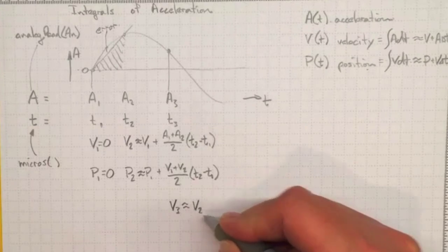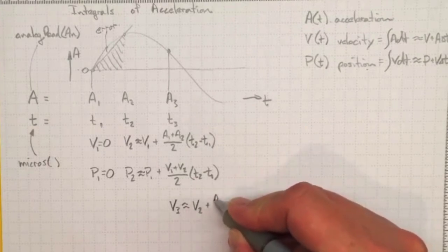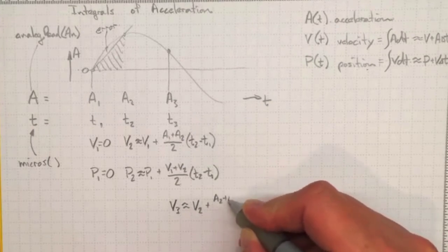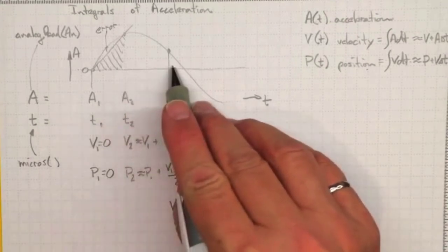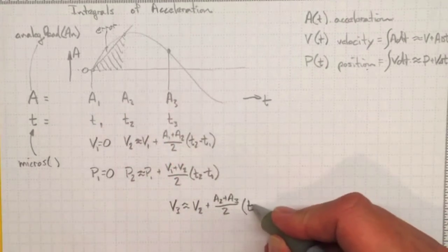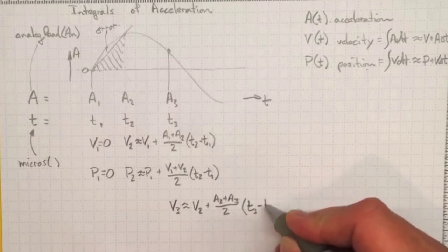V3 will be whatever the velocity was at time 2 plus some average acceleration between points 2 and 3. So a2 plus a3 divided by 2 times the difference in time between those two times, so t3 minus t2.